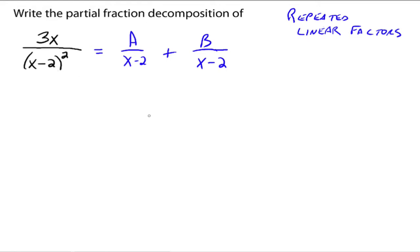What we need is a fraction for all the possible denominators that could give us x minus two squared. x minus two can be combined to get x minus two squared, and x minus two squared is also a valid denominator. So if you had x minus two cubed, you would need one fraction for just x minus two, one for x minus two squared, and then plus C over x minus two cubed. You need all those possible denominators.